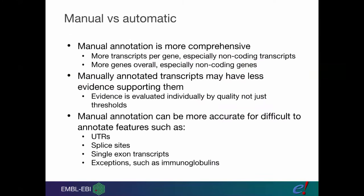Manual annotation does come out with slightly different answers. Manual annotation tends to be a lot more comprehensive. You get more transcripts per gene, especially non-coding transcripts, and more genes overall, especially non-coding. This is because when you manually annotate, you can be a lot more flexible with what your thresholds are.